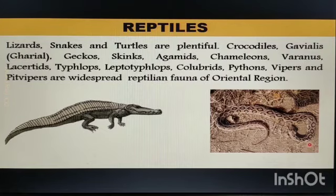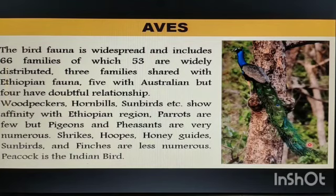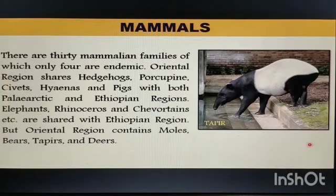The bird fauna is widespread and includes 66 families, of which 53 are widely distributed. Three families are shared with the Ethiopian Region, five with the Australian Region, and four have doubtful relationships with other regions. Woodpeckers, hornbills, and sunbirds show affinity with the Ethiopian Region. Parrots are few, but pigeons and pheasants are very numerous. Shrikes, hoopoes, honey guides, sunbirds, and finches are less numerous. The peacock is the Indian bird.